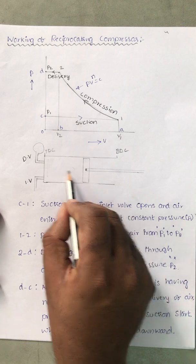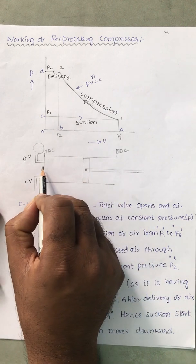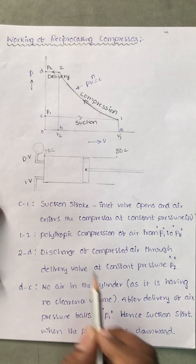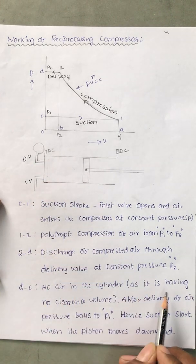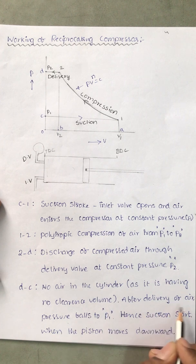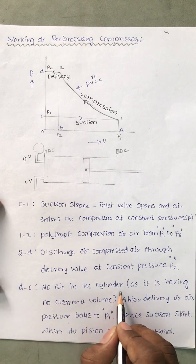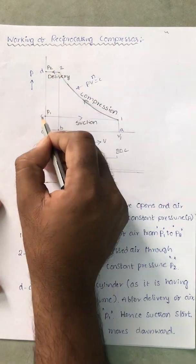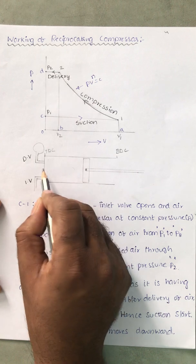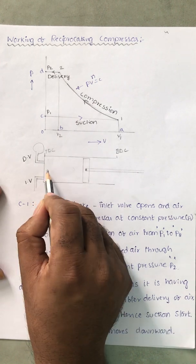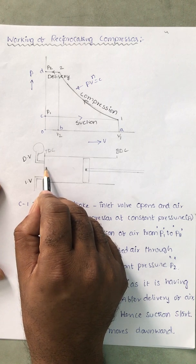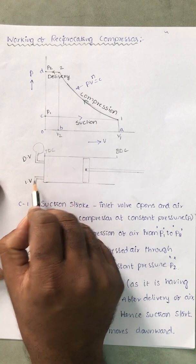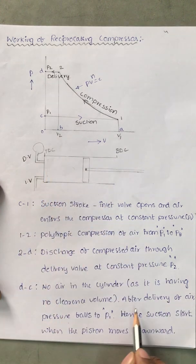When the piston reaches the top dead center, there is no gap between the cylinder head and the piston — the piston almost touches the cylinder head. Since there is no gap, there is no air left in the cylinder after delivery. After delivery of air, the pressure directly falls from P2 to P1 because there is no air remaining. If there were air present, the compressed air from the previous compression stroke would expand, and this would affect the suction stroke. That is why we are not providing any clearance volume here.